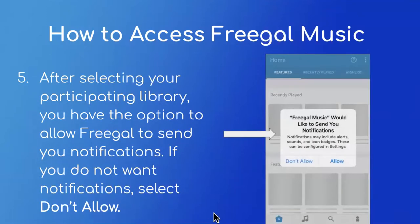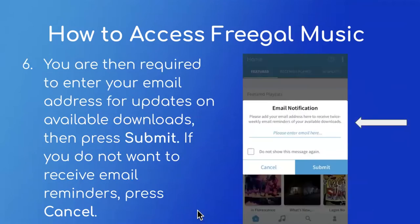After you select your participating library, you will have the option to let Freegal send you notifications, though it is your choice. If you do not want notifications, you can click on "don't allow." From there, you are required to enter an email address for updates on available downloads, and then click submit. If you don't want to receive any email reminders, you can click on cancel, which will simply skip those extra emails in your inbox.